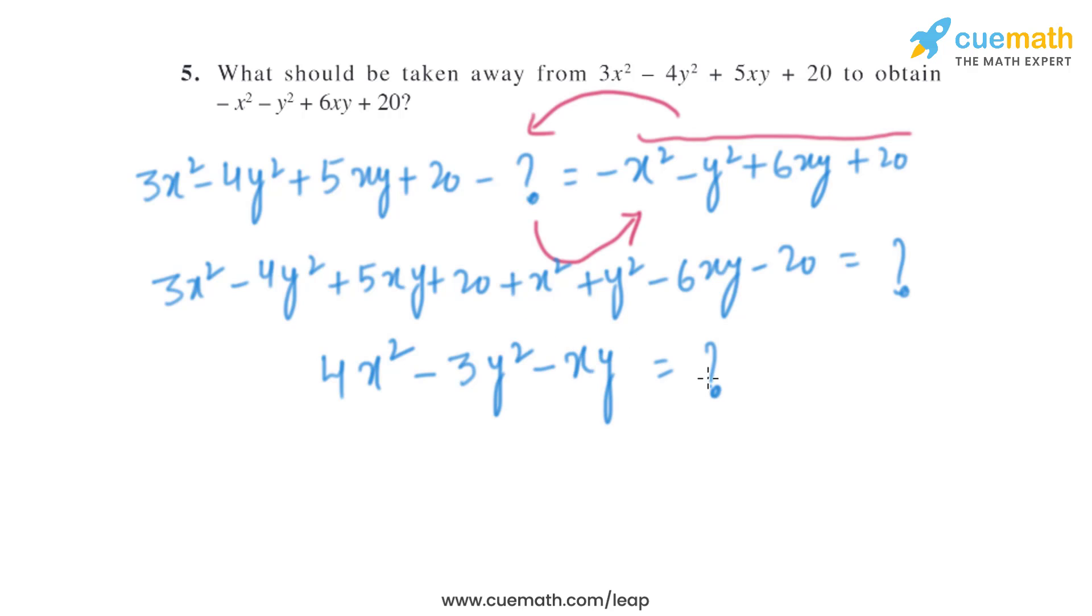And +20 and -20 will be zero. So this is the term which we will subtract, this is the expression which we will subtract: 4x² - 3y² - xy from 3x² - 4y² + 5xy + 20.